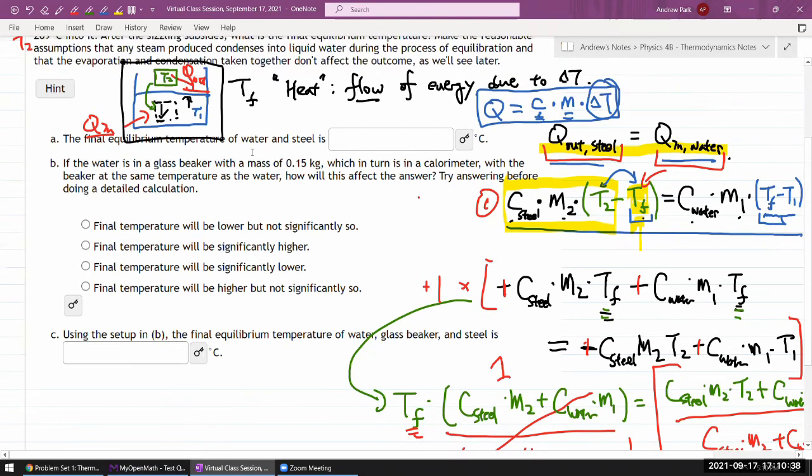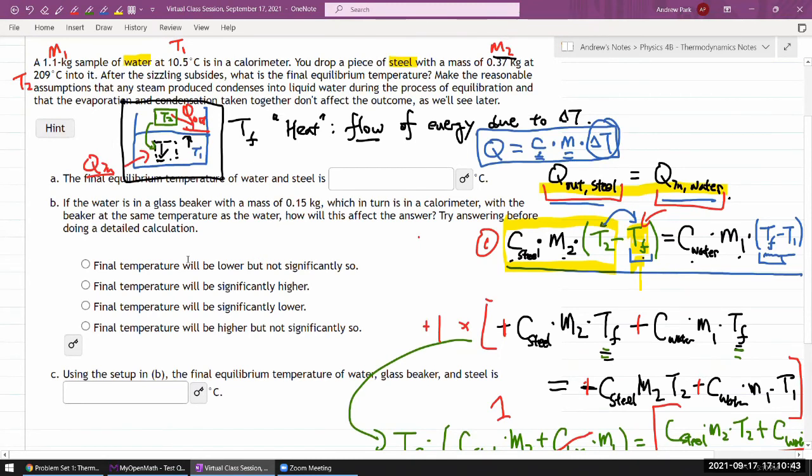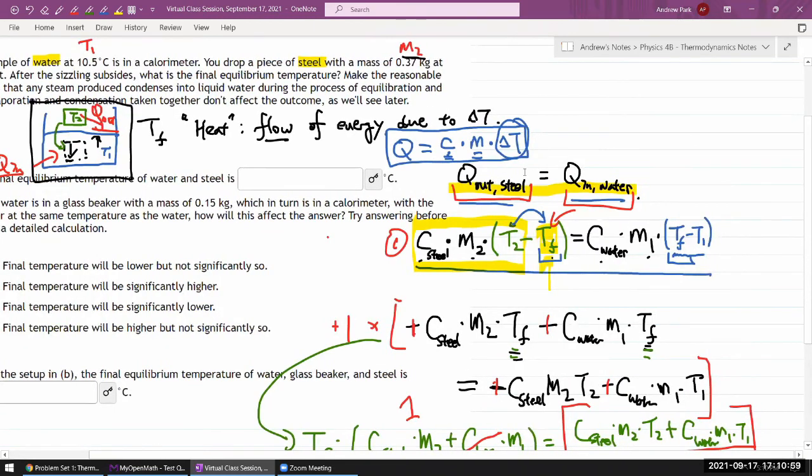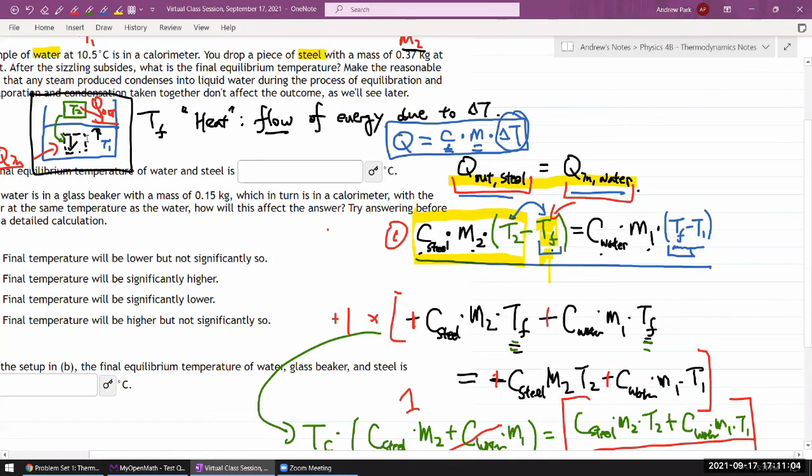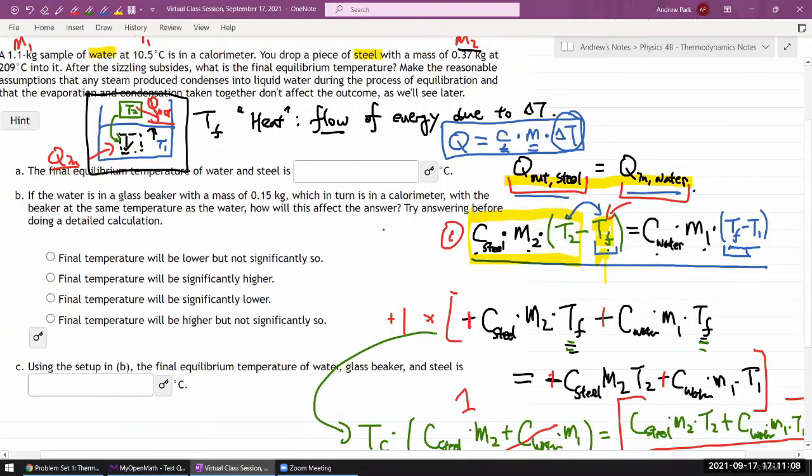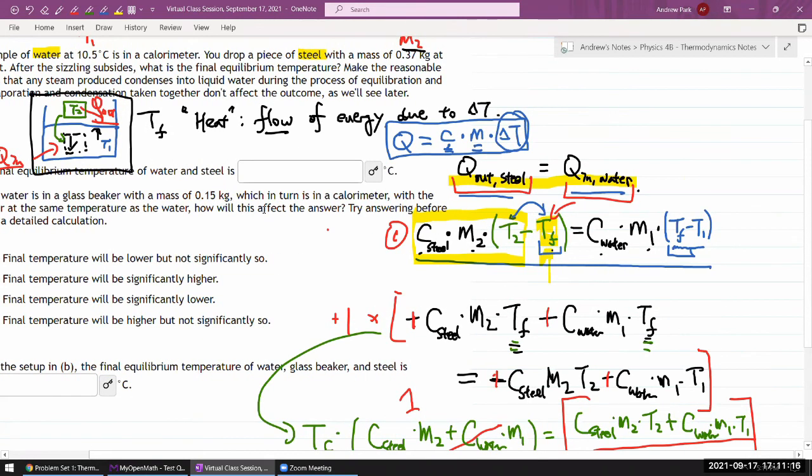Part B makes this a little bit more complicated. I think I know the answer - the final temperature will be lower but not significantly so. It has to do with how you set up this equation. Heat out of the steel goes into the water. If you account for the glass beaker, which starts at the same temperature as water, then additional heat has to flow into the glass beaker. So there's a plus Q in beaker, which would add this additional term here.